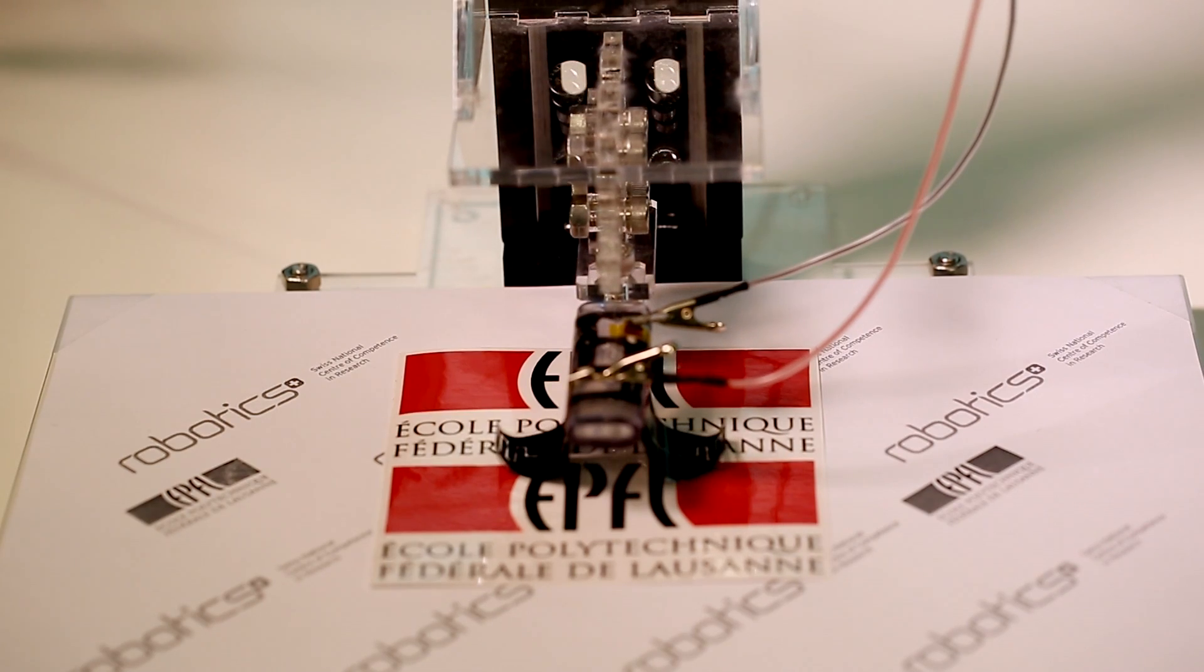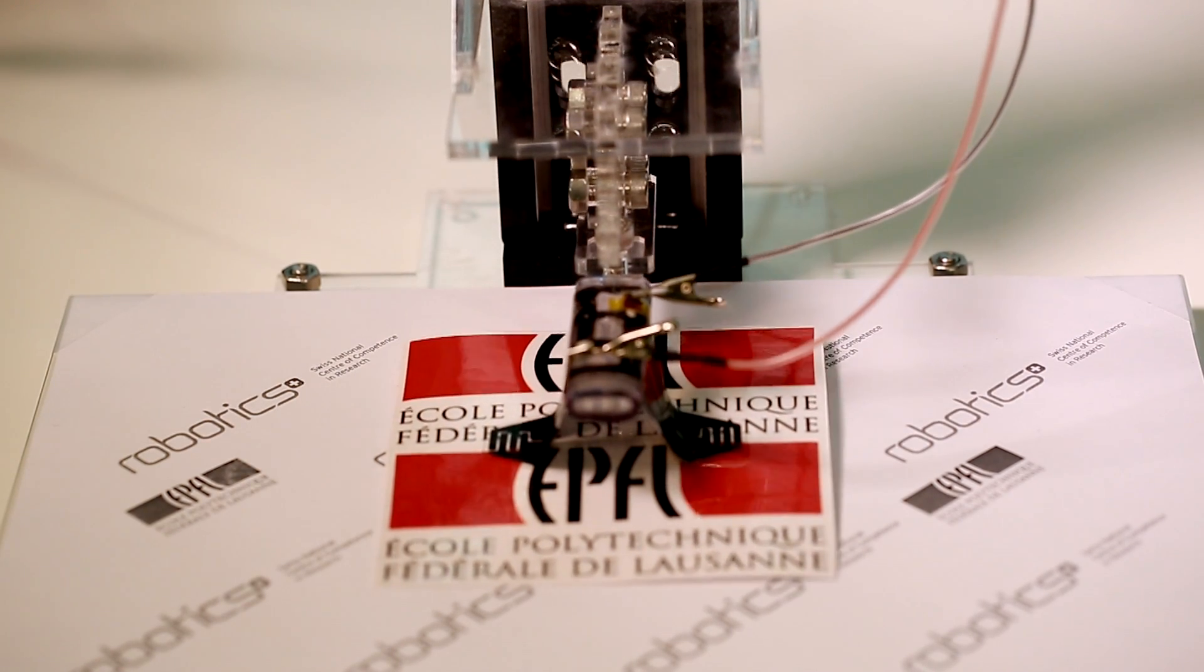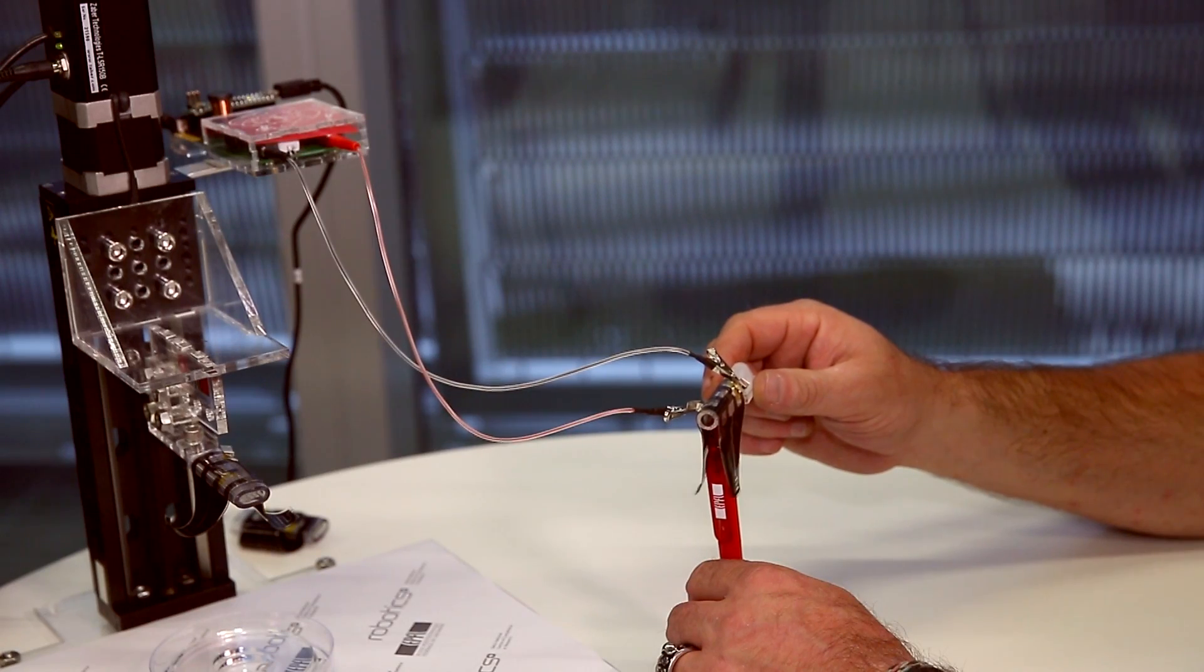The advantage of this device is you can grab many different types of objects of many shapes. For example, you can grab a piece of paper flat, you can grab an egg or you can grab any type of object. And these objects can be also very fragile because the mechanisms will very softly comply with the shape of the object.